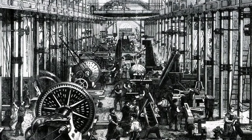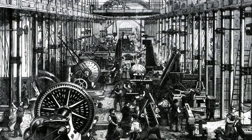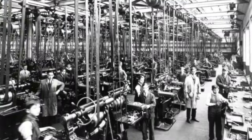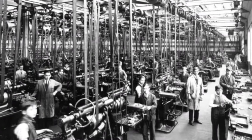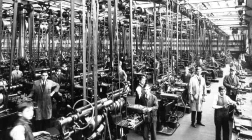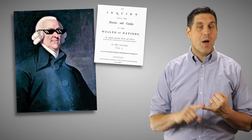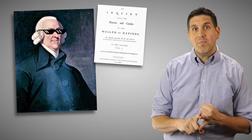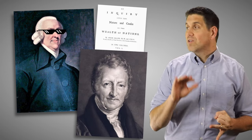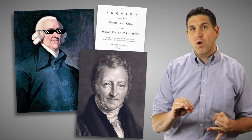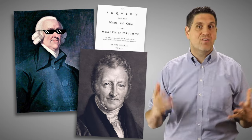Technological advancements, like the widespread use of the steam engine, changed what would be produced and how it would be produced. It's also when Adam Smith, the founder of modern economics, wrote about how markets and economies work, and when Thomas Malthus wrote that we're all going to die of starvation.